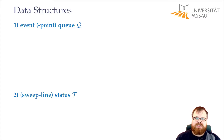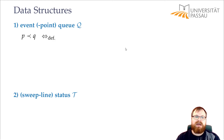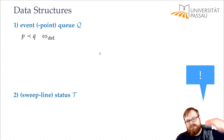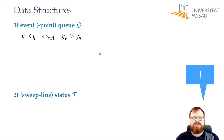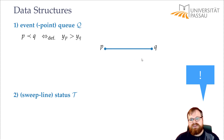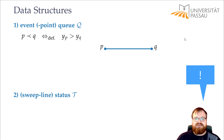Before we decide on the data structure for the event point queue Q, we first have to define the order in which we want to pick the points. If we have two points P and Q, we want to pick P before Q if the y-coordinate of P is higher than the y-coordinate of Q. But it could also be that we have a horizontal segment where P and Q have the same y-coordinate — it might even be an intersection point and some input point — and in that case we have to define the order.